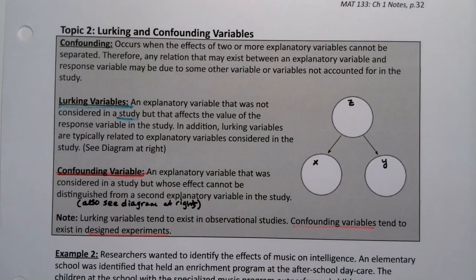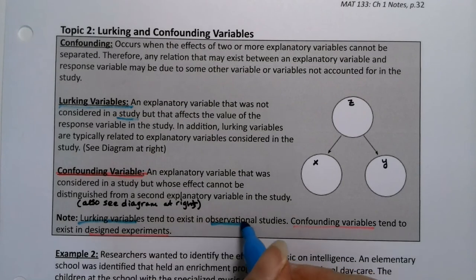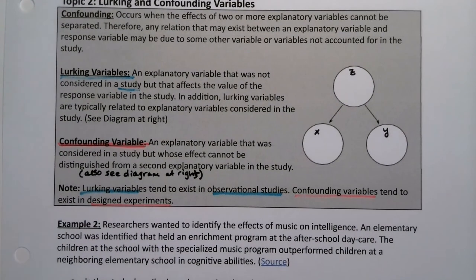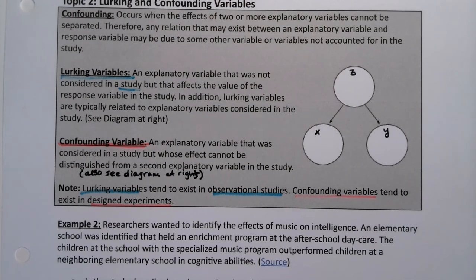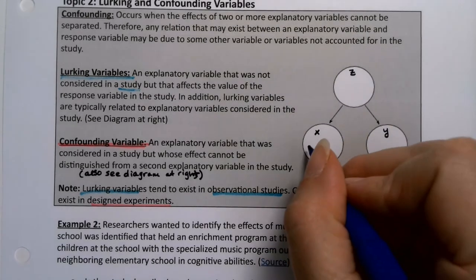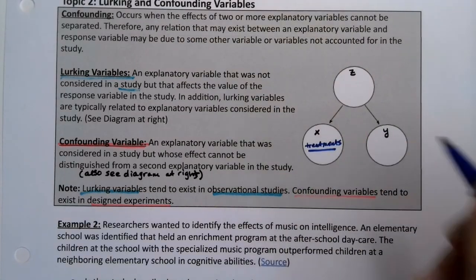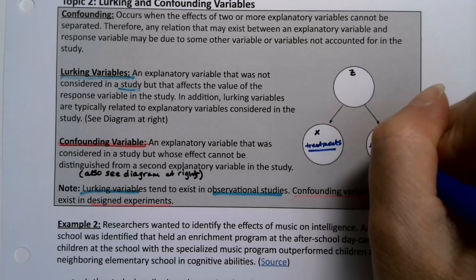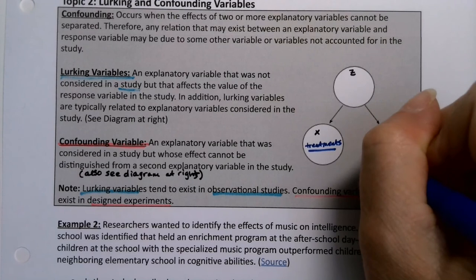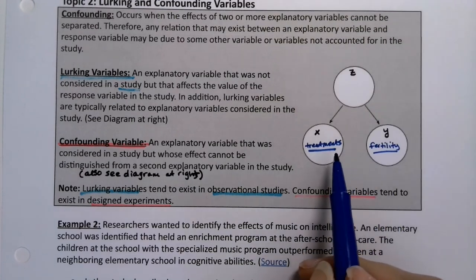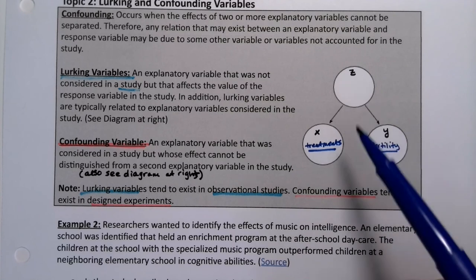A confounding variable tends to be more in a designed experiment. So they're basically the same thing, but their context is different. A confounding variable is an explanatory variable that was considered in the study, but whose effect cannot be distinguished from a second explanatory variable. Let's think about our example with the orangutans — we have our treatments, which are our X: the in vitro fertilization and the fertility drugs. Over here we're interested in the orangutan fertility. But of course, there's something else going on that I cannot separate out from this.